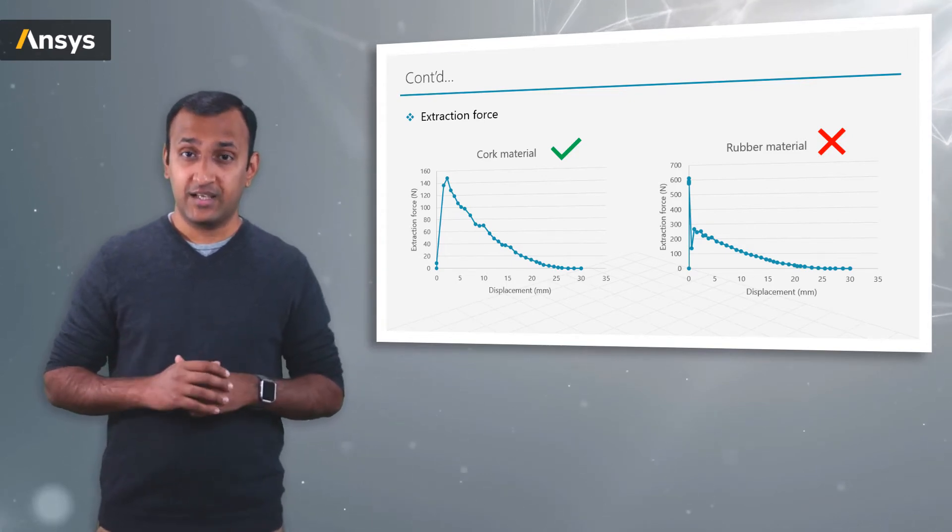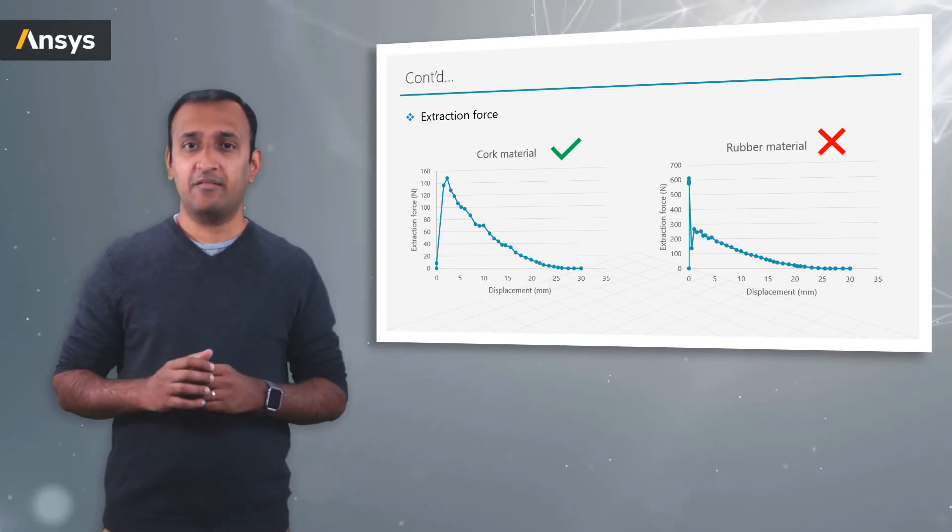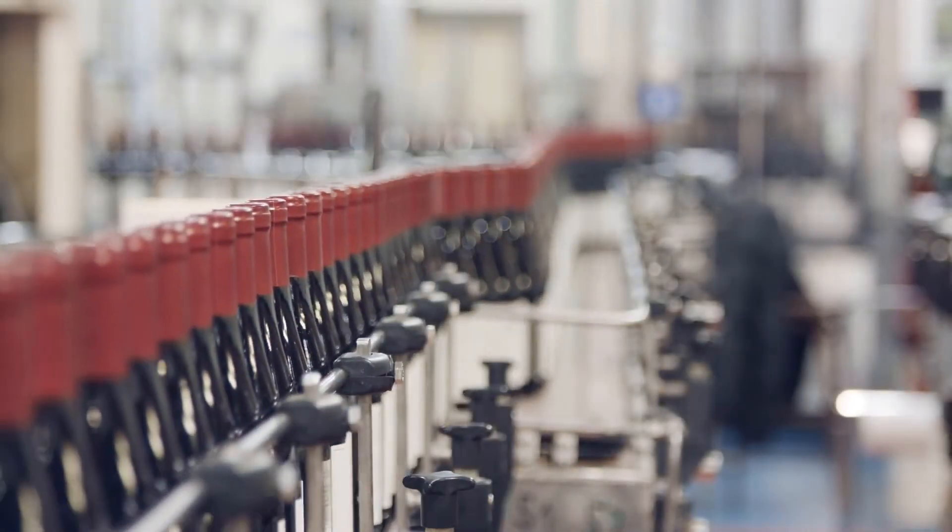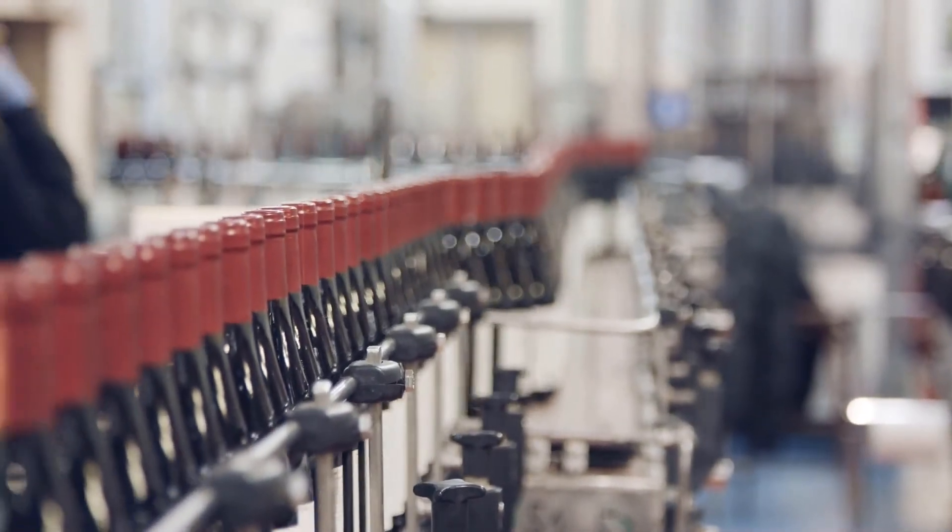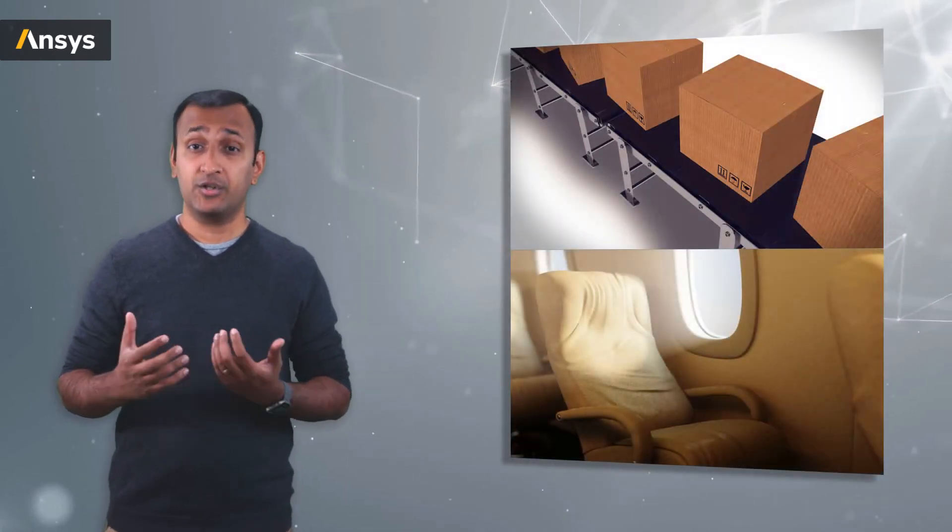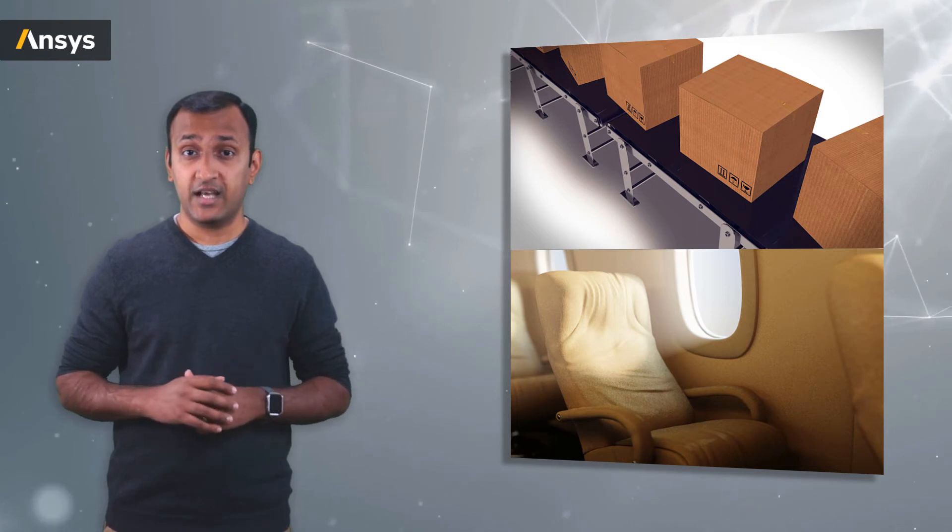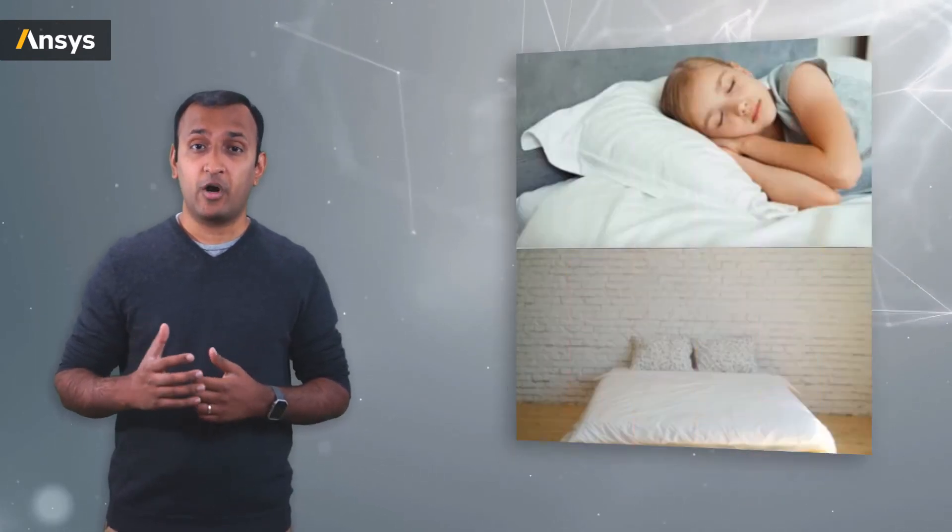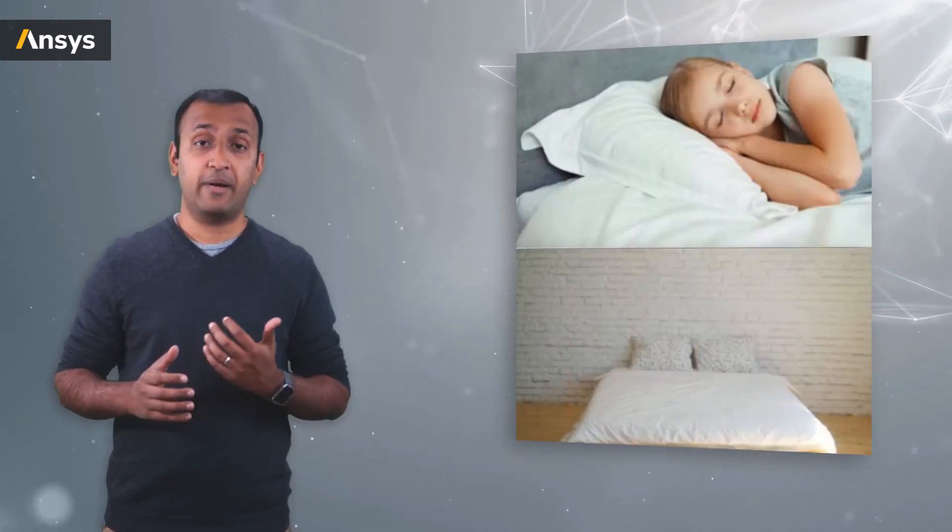So in this case we can clearly see how compressible materials are used in wine bottling applications. In fact, due to the same reason, foams, which are also known to be compressible, are used in packaging applications and in making cushions in car and airplane seats, and even commercial consumer products such as pillows and mattresses.